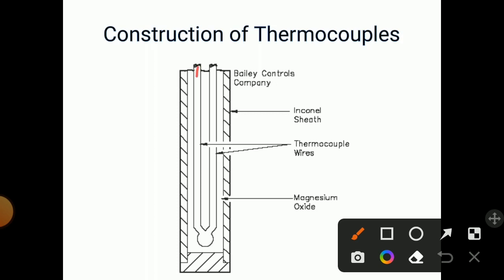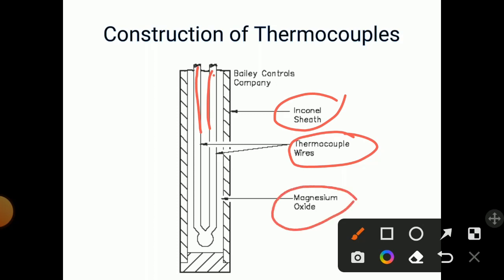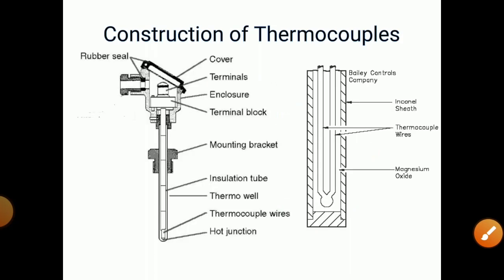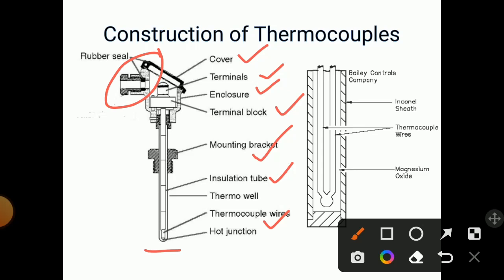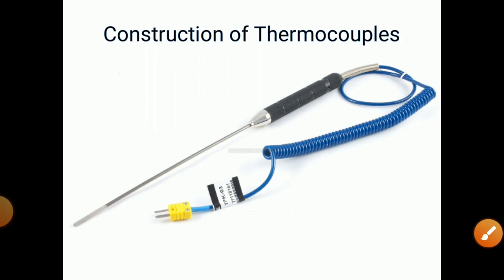The thermocouple wires are protected with an Inconel sheath on the outer side, and inside that, magnesium oxide is placed. Additional outer elements include a cover, terminals, enclosure, terminal block, mounting bracket, insulation tube, and below that the thermocouple wires, with the hot junction at the bottom sealed with a rubber seal. This is the construction of thermocouples — this is the actual thermocouple that can be obtained from the market.